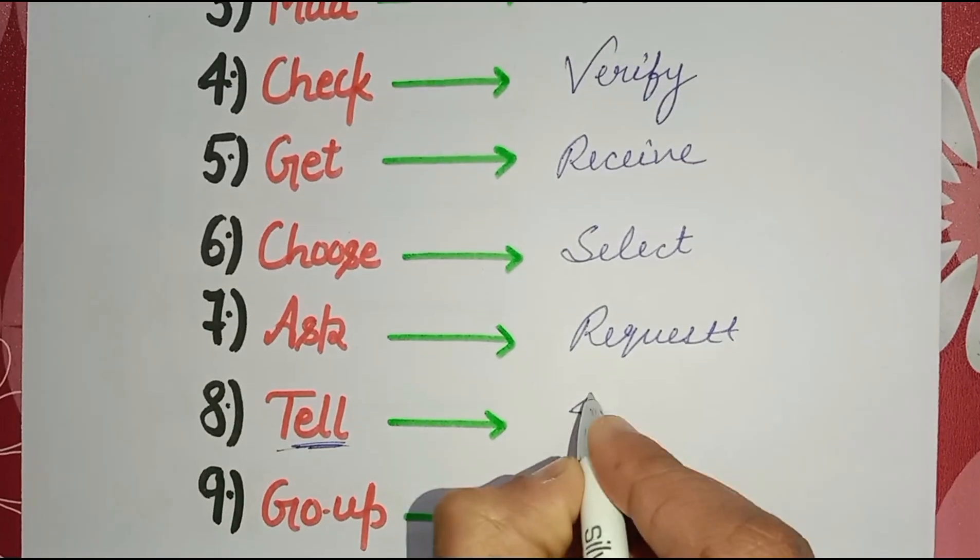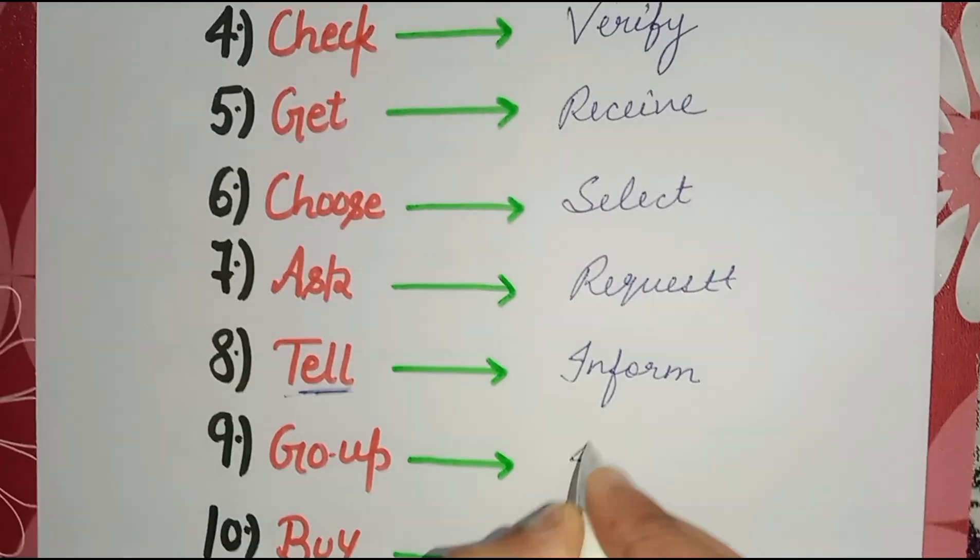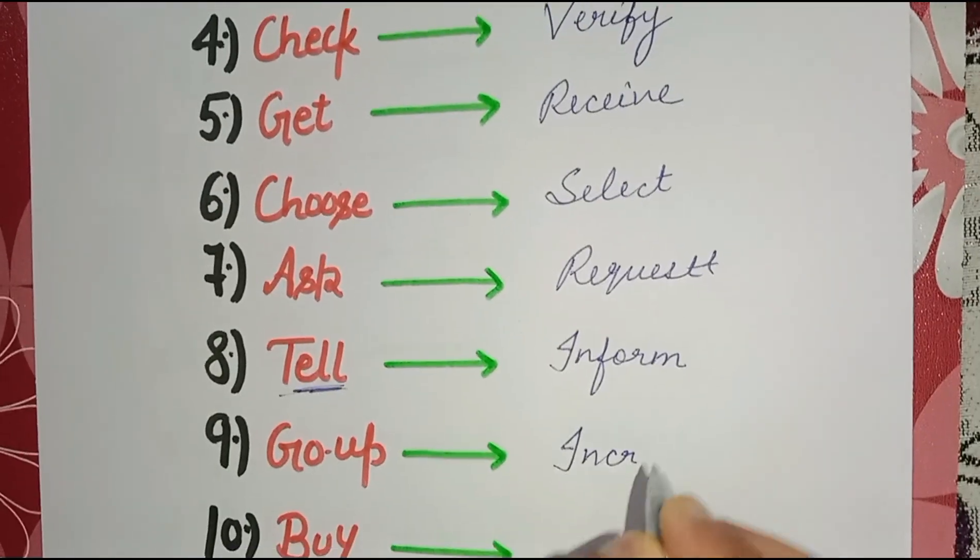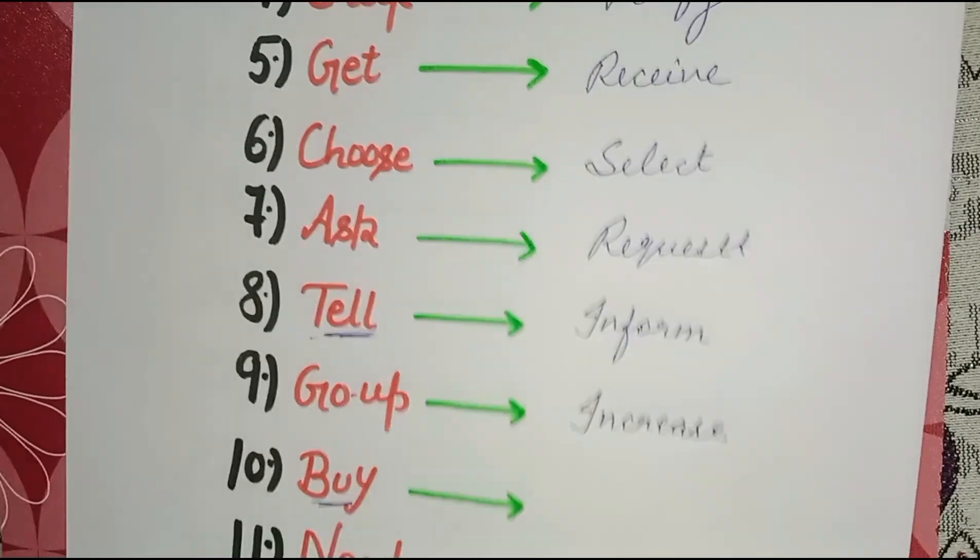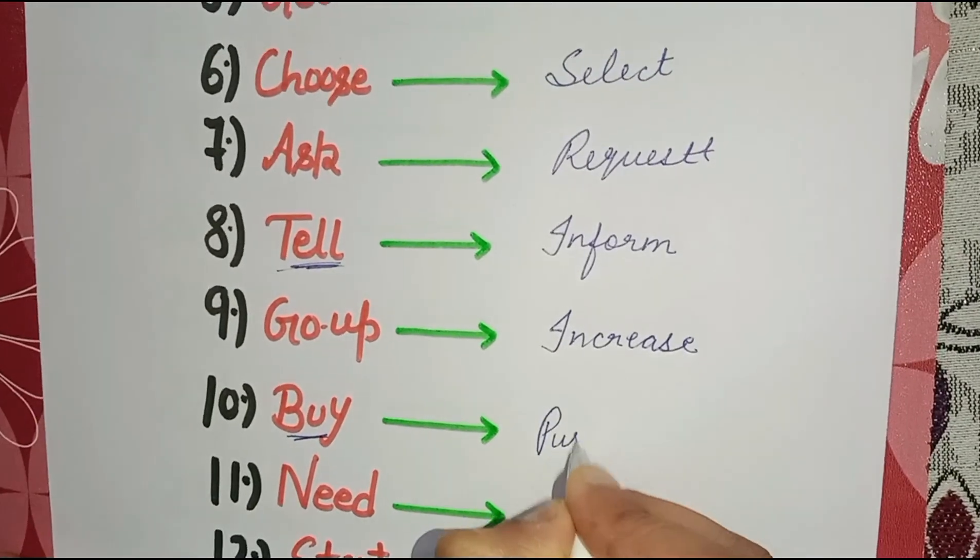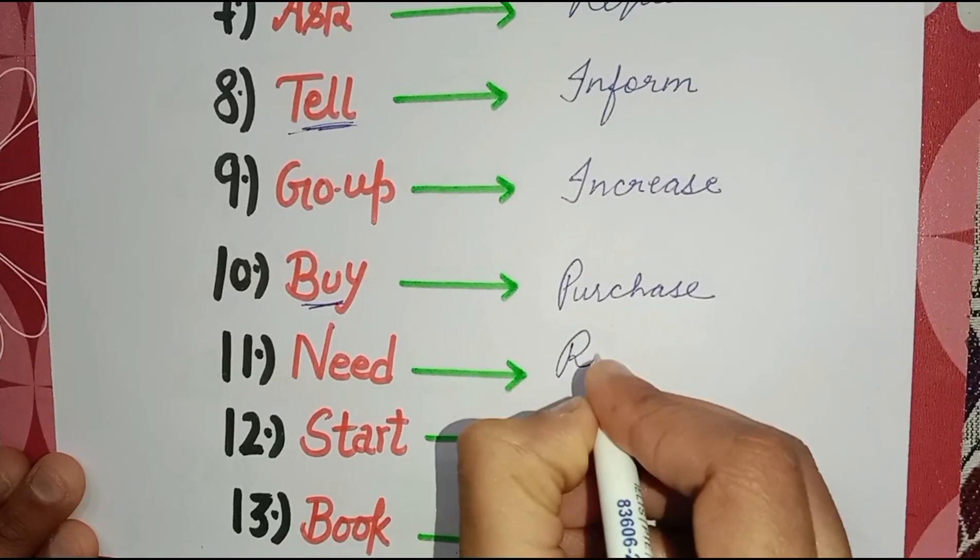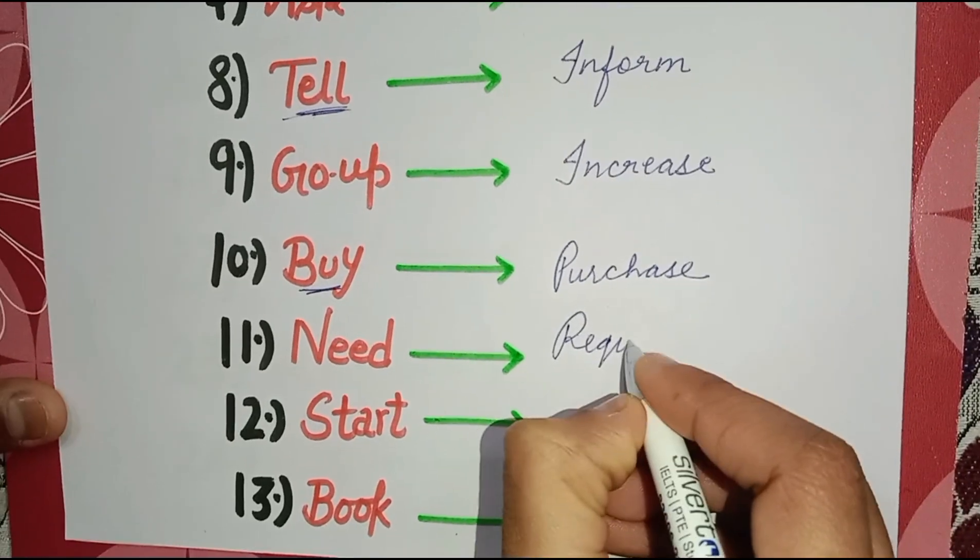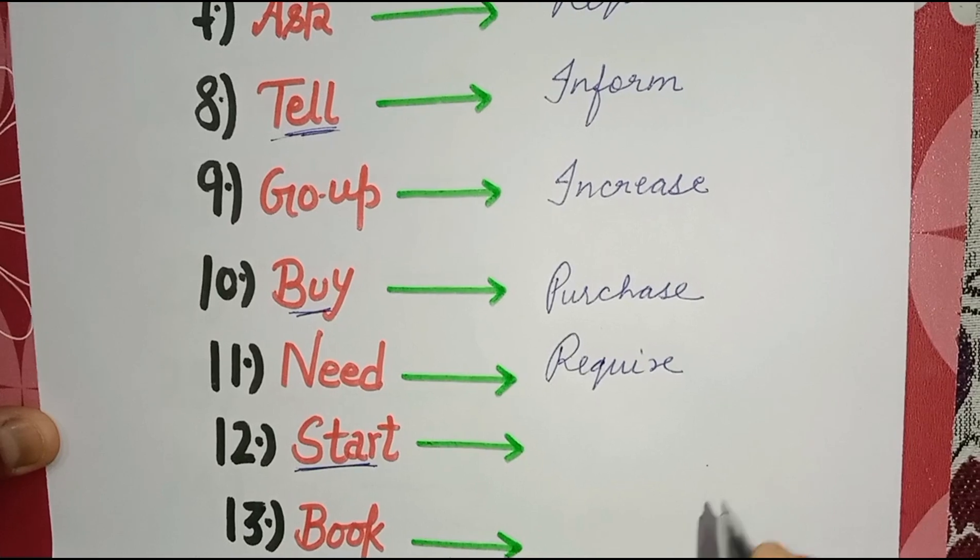'Go up' means 'increase'. 'Buy' - you can say 'purchase'. 'Need' means 'require'. 'Start' - initially, or you can say 'commence'.